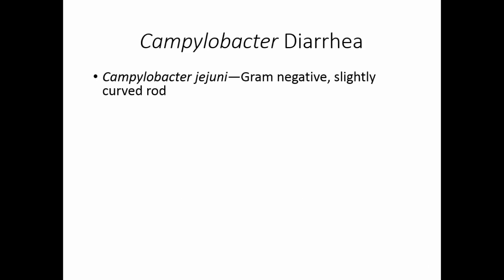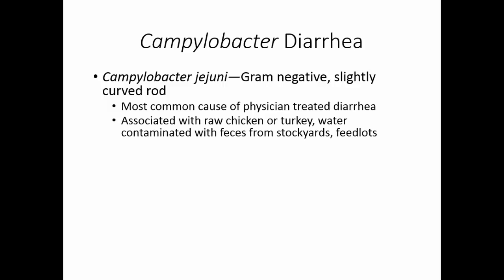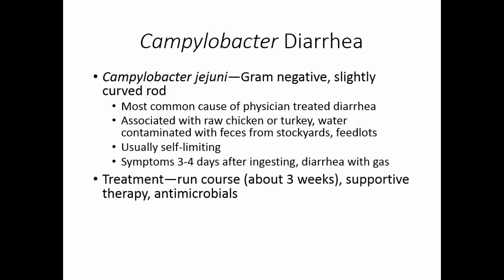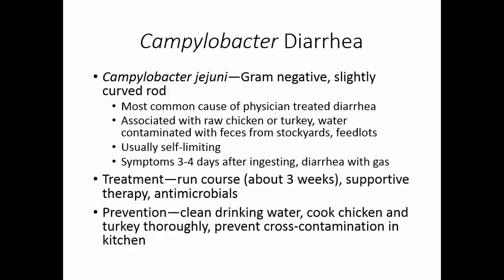Campylobacter diarrhea is caused by Campylobacter jejuni, a gram-negative slightly curved bacillus. This is probably the most common cause of physician-treated diarrhea, associated with raw chicken or turkey or water contaminated with feces from stockyards, feedlots, and pastures. The disease is usually self-limiting, with symptoms occurring three to four days after ingestion, so many people miss the actual cause. The diarrhea is accompanied by gas and typically runs its course in about three weeks. Supportive therapy is necessary, and if antimicrobials are given, they should be given early, as late administration can lead to a carrier state. Prevention includes clean drinking water, thorough cooking of poultry, and avoiding cross-contamination.